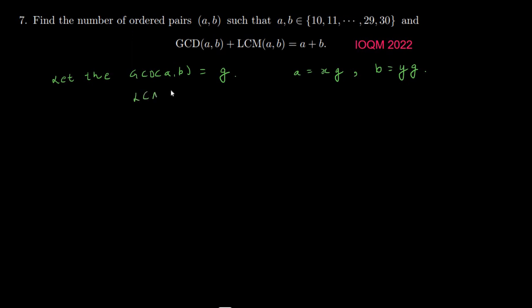Now if a and b are like that where g is the GCD, what will be LCM? LCM(a, b) should equal x·y·g because one way of finding it is that LCM·GCD = a·b. Now LCM·g = (x·g)·(y·g), so if you cancel this g you get LCM = x·y·g.